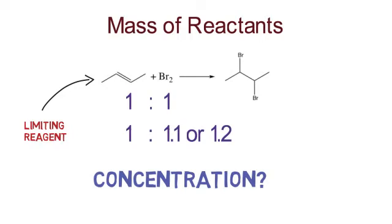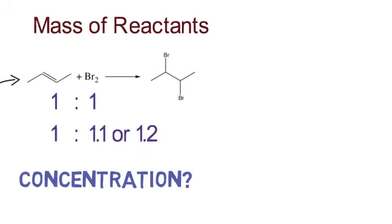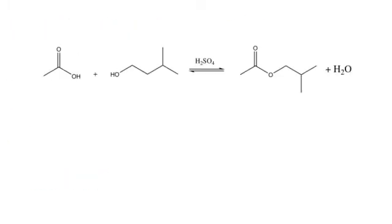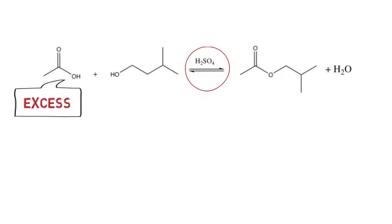Other factors might also affect the amount of material needed. For example, what if the reaction is in equilibrium? Then, you might want to consider using one of the reactants in large excess to drive the reaction forward. An example is synthesis of an ester using acetic acid and alcohol. This reaction is in equilibrium and so you might want to consider using excess acetic acid to drive the equilibrium to the product.